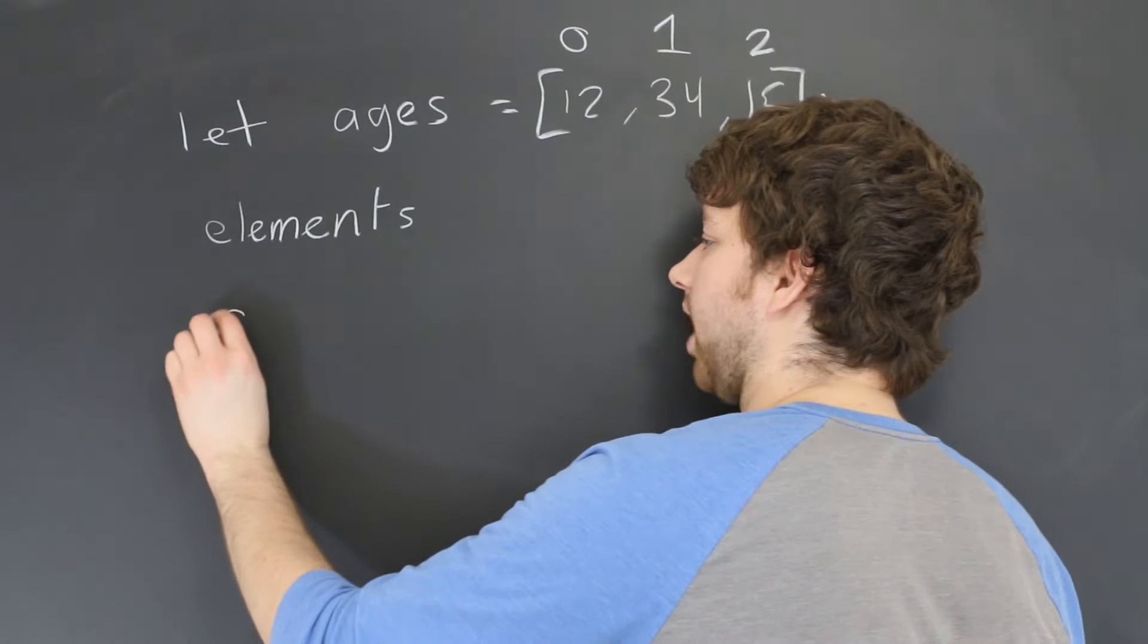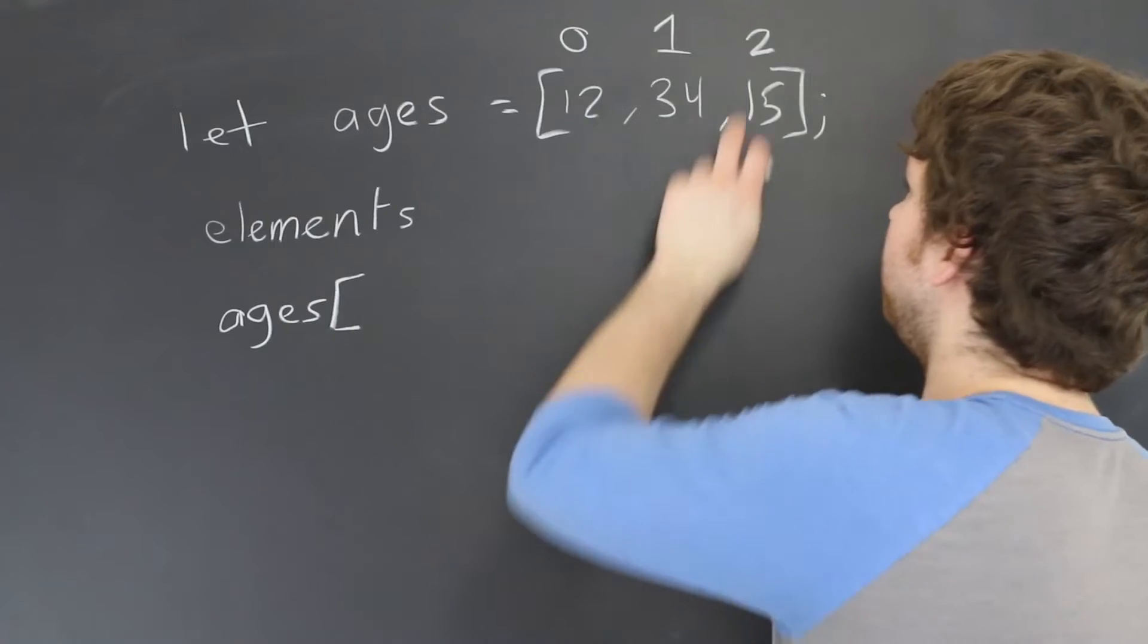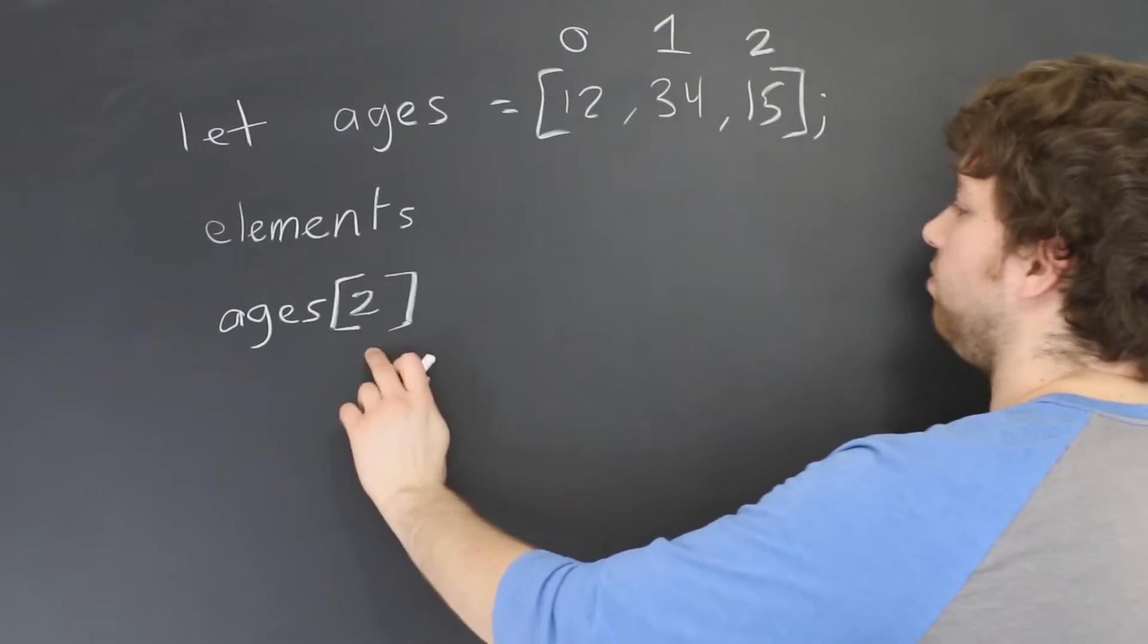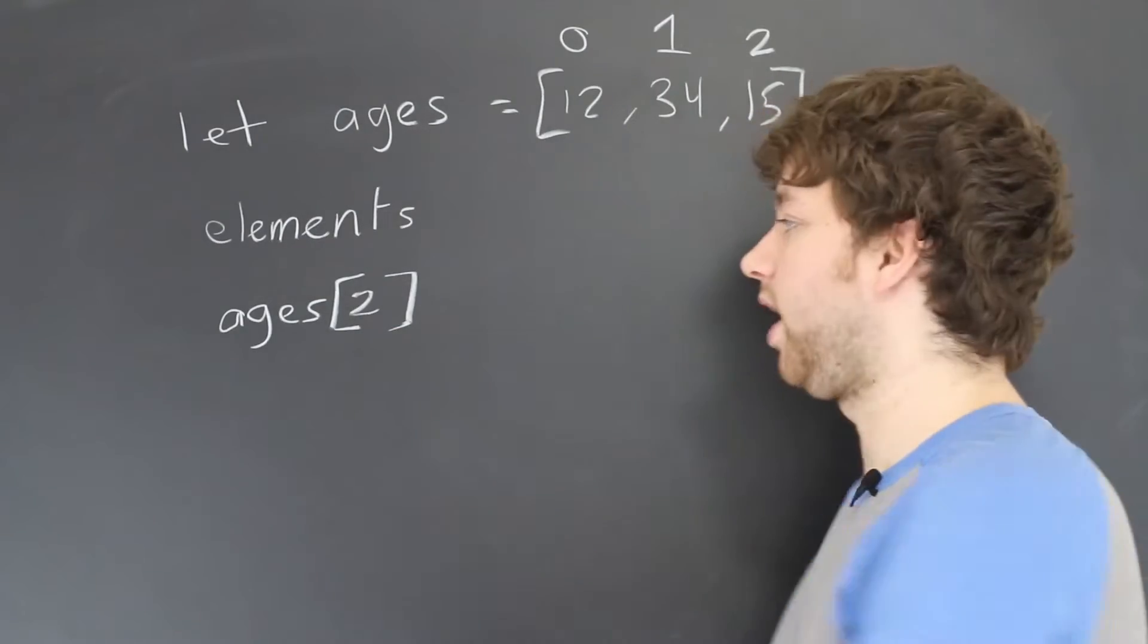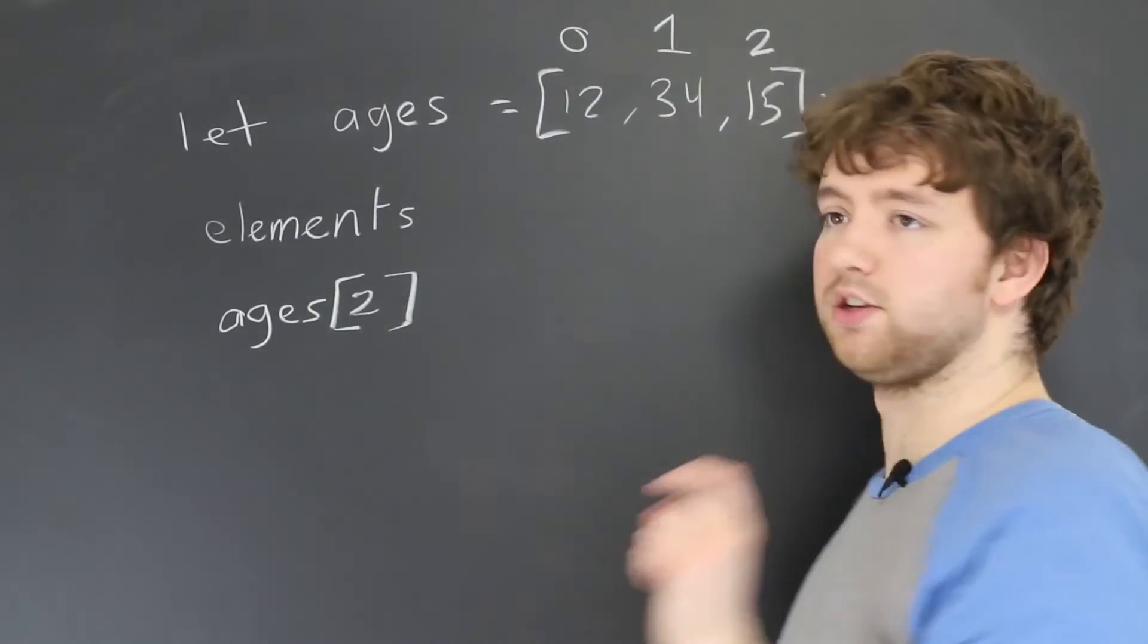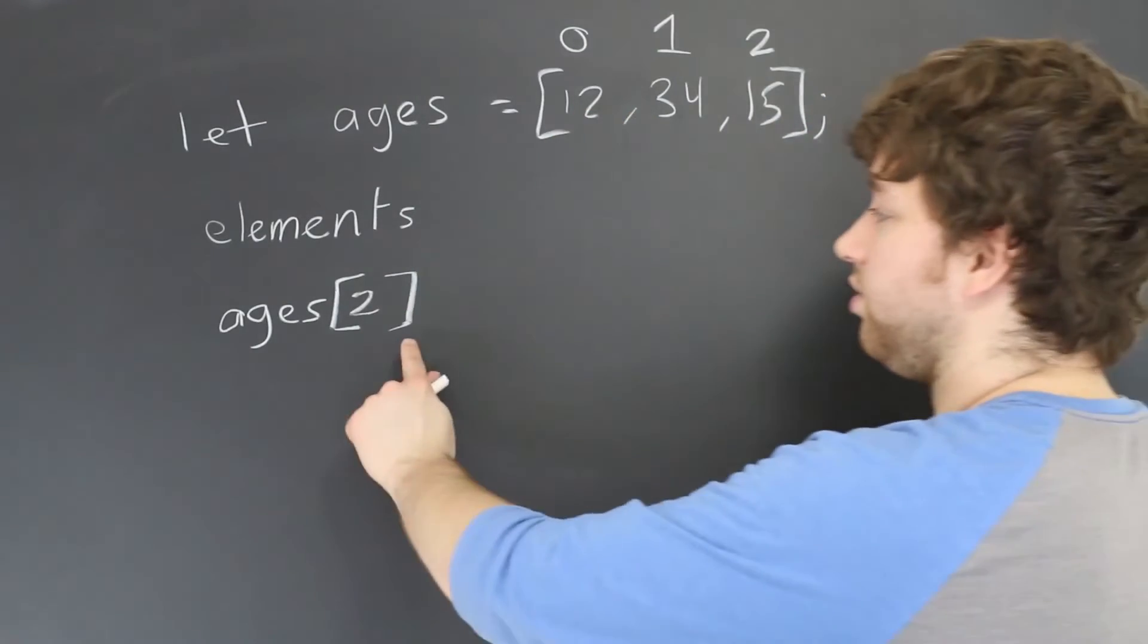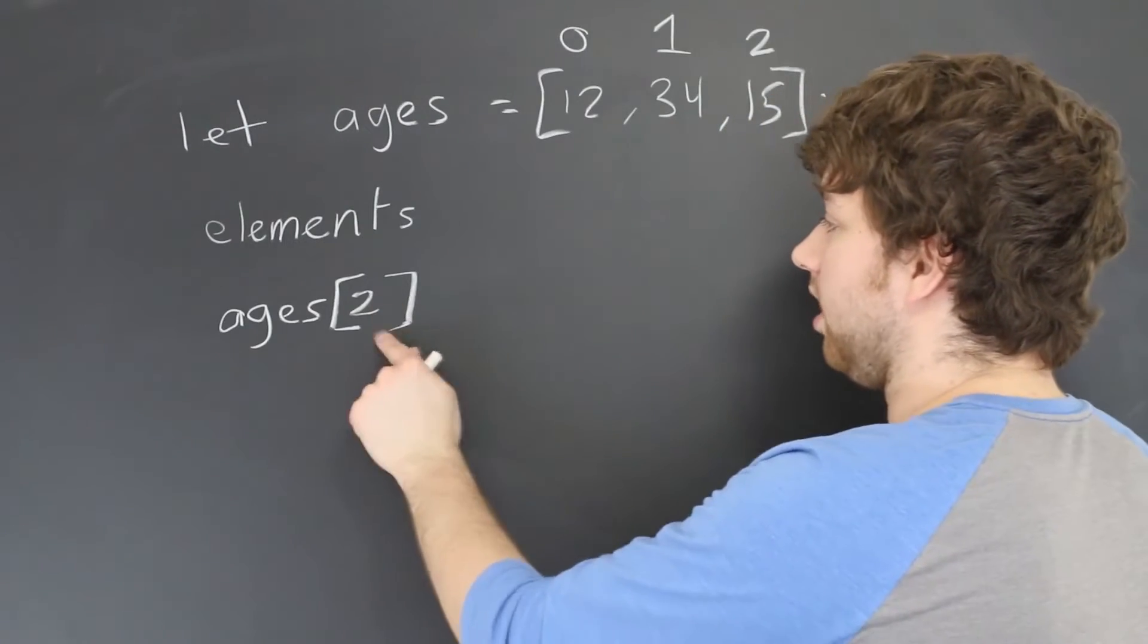You can reference that item using that index. If you wanted to get that item, you just say ages, and then in square brackets you would put a two. This is going to basically give us the value 15. It's a dynamic way of grabbing the element. So rather than hard coding 15, we can store that in the array and then just reference that position.